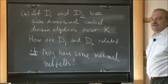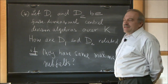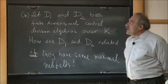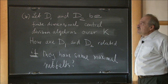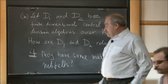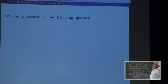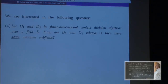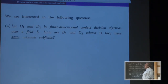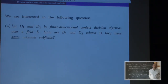Thank you very much for the opportunity to speak in the number theory seminar. I'm going to be talking about this joint work with Vladimir Chudnovsky and Igor Rapinchuk. In the first half of the talk we'll be concerned with the following question: suppose we have two finite dimensional central division algebras over a field K. How are these algebras related given the fact that they have the same maximal subfields?